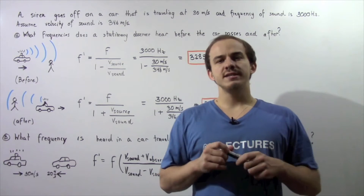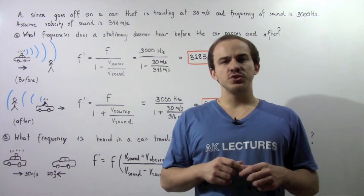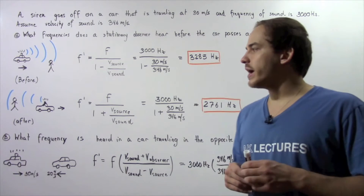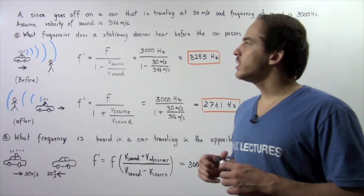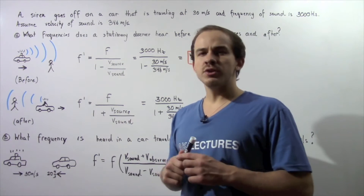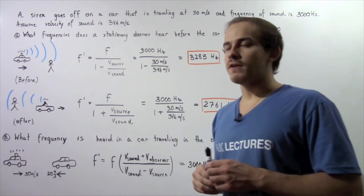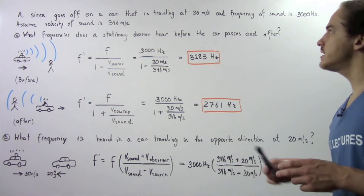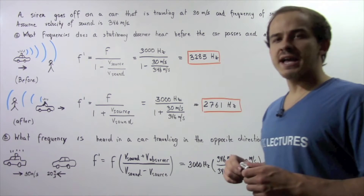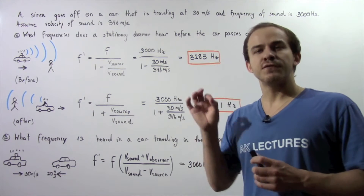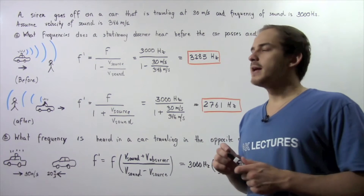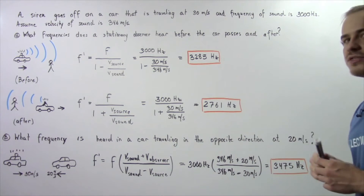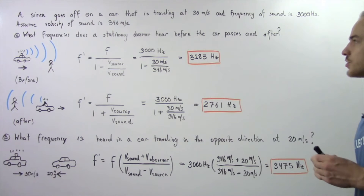In the following example, we're going to use the Doppler effect for sound waves. A siren goes off on a car that is traveling at a velocity of 30 meters per second, and the frequency of the sound wave produced by the siren is 3000 hertz.